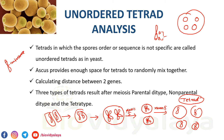If we cross capital A, capital B with small a, small b, then we will get three patterns of segregation in the tetrads. Three types of tetrads result after meiosis: parental dietype (PD), non-parental dietype (NPD), and tetratype (TT).